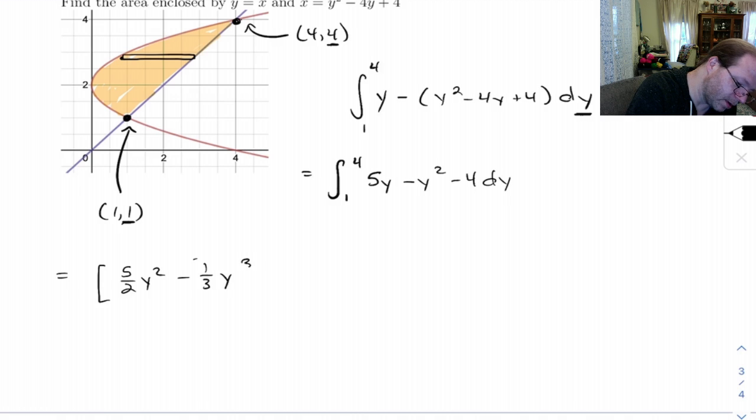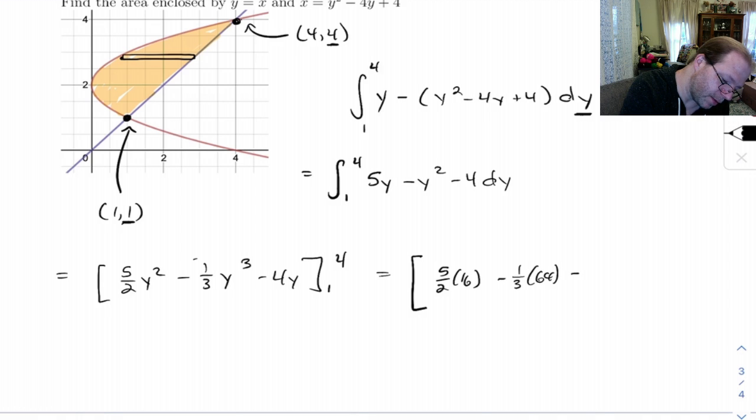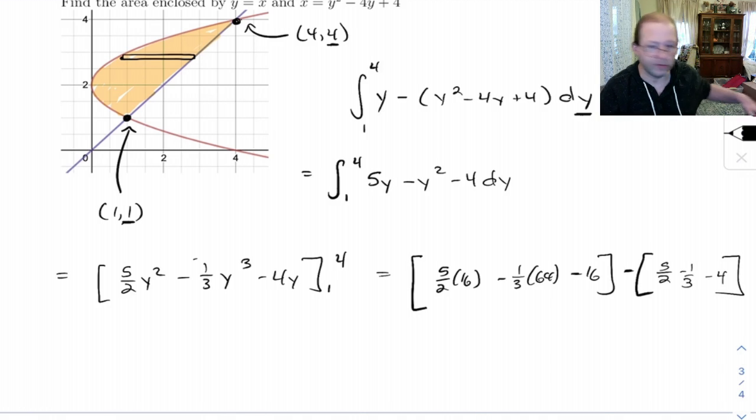1 3rd y cubed minus 4y from 1 to 4, and I've got to plug both of those numbers in there. Well, let's see, 5 halves of 16 minus 1 3rd of 64 minus 4 times 4 is 16 minus, if we plug into this, we're going to do this on my calculator. Let's see, 5 halves of 16, that's, well, I'm going to do some of it in my head. That's 8 times 5, that's 40 minus 64 over 3 minus 16. So this first bit is 8 thirds.